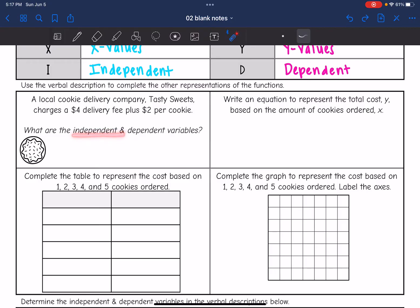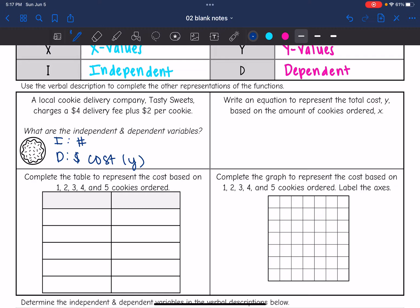So the independent will determine the dependent. Sometimes it's easier to think about the dependent. The dependent is the output. So the output is going to be the total cost in dollars. That'll be the Y value. And what determines the total cost? Well, the number of cookies that you buy. So that would be the independent, or what we're going to use to represent the X values.